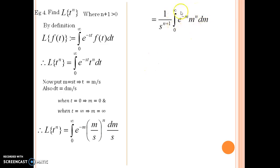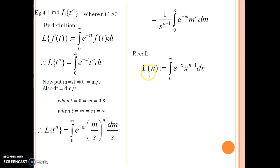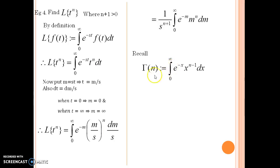To evaluate this integral further, I recall the definition of the gamma function from integral calculus. The gamma function, gamma of n, is defined as the integral from 0 to infinity of e to the power minus x times x to the power n minus 1 dx. Observing that gamma of n plus 1 is the integral from 0 to infinity of e to the power minus x times x to the power n dx.